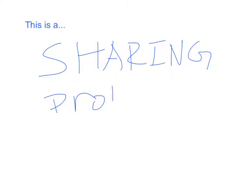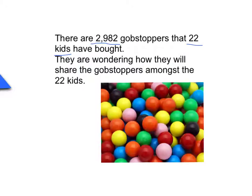This is a sharing problem. There are 2,982 gobstoppers that 22 kids have bought. They are wondering how they will share the gobstoppers amongst the 22 kids.